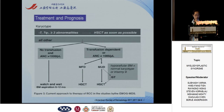This is the EWOG MDS group's treatment strategy for MDS RCC patients, published in 2011. First, they check the karyotype. If the patient has monosomy 7, 7Q-minus, or more than 6 abnormalities, stem cell transplant is suggested. Otherwise, if the patient has no transfusion dependence and an absolute neutrophil count greater than 1,000 per microliter, a watch-and-wait strategy is suggested with bone marrow aspiration rechecked in 6 to 12 months. If the patient has transfusion dependence or an ANC less than 1,000 per microliter, stem cell transplant is suggested. If patients have hypocellular bone marrow with normal karyotype or trisomy 8, immunosuppressive treatment could be used.